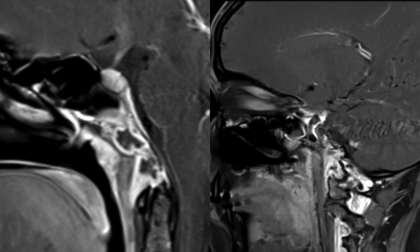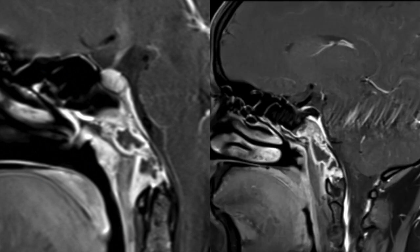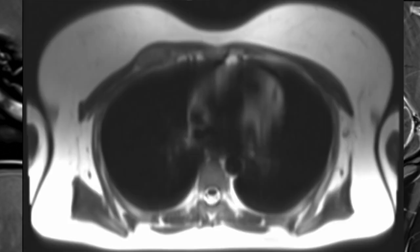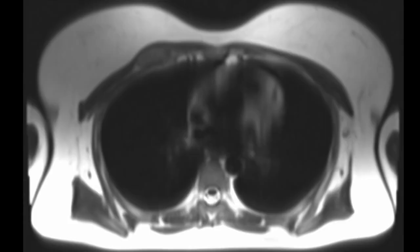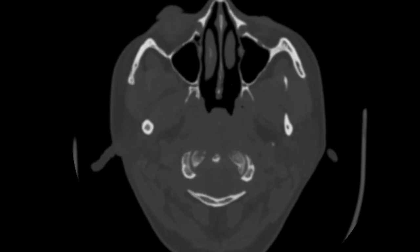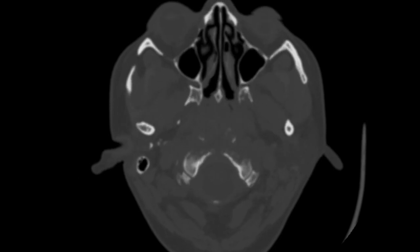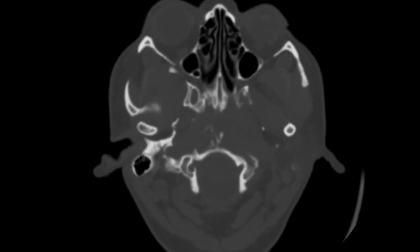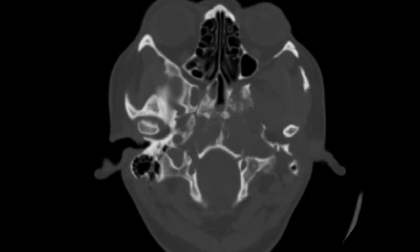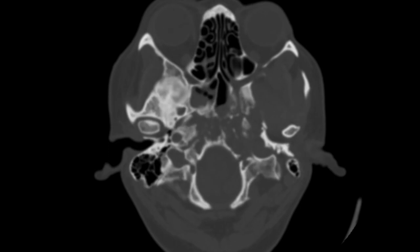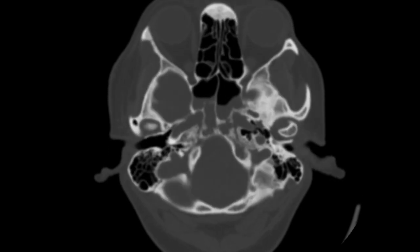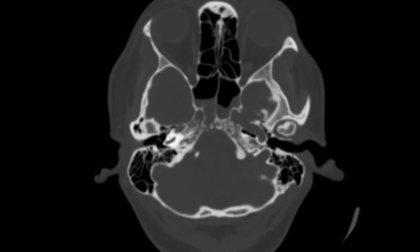In addition, localizer sequences of the thorax were obtained, which showed an expansile lesion involving the anterior aspect of the right third rib. CT cuts of the base of skull showed permeative osteolytic lesions in the mentioned bones with no evidence of matrix mineralization.